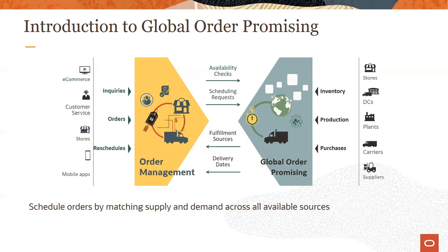These data are collected into the planning data repository using either collections or the file-based data import framework offered by Oracle Cloud. GOP uses a rules-based framework for promising, leveraging rules to determine potential fulfillment sources and the manner in which to promise orders. GOP could assume infinite availability of supply, apply a predefined lead time, or actively track available supplies. It offers the flexibility to select from a wide range of supply types such as on hand, purchase orders, work orders, transfer orders, and so on. GOP can also promise orders by creating new supplies of type make, buy, or transfer based on defined rules.